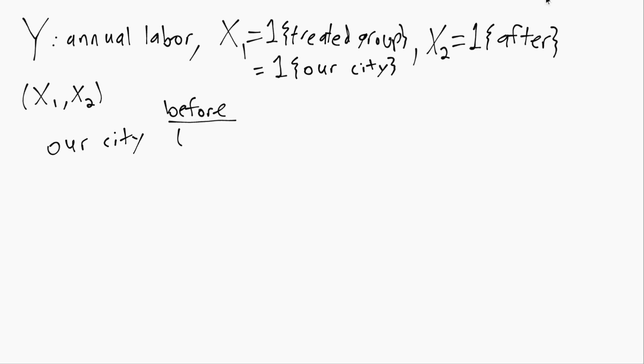and we observe them before the minimum wage increase, their X1 is equal to 1 because they're in our city, they're part of the group that will eventually be treated. But their X2 is equal to 0 because we are not in the after period.